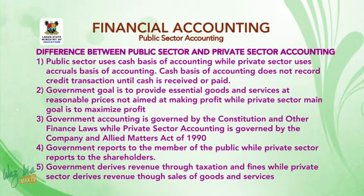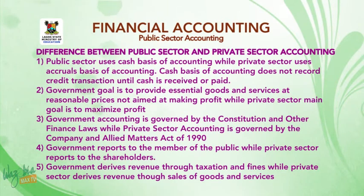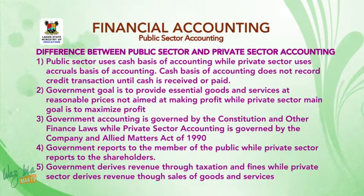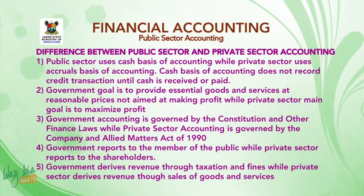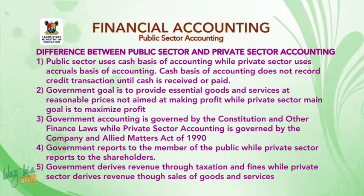Differences between public sector and private sector accounting: One, public sector uses cash basis of accounting while private sector uses accrual basis of accounting. Cash basis of accounting does not record credit transactions until cash is received or paid. Two, government's goal is to provide essential goods and services at reasonable prices, not aimed at making profit, while the private sector's main goal is to maximize profit.